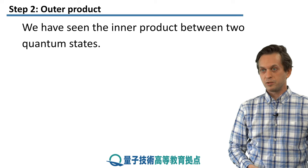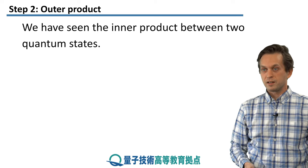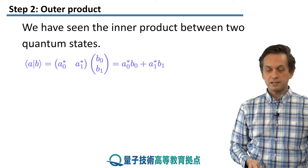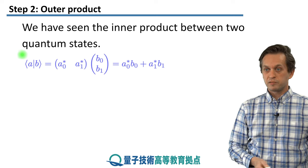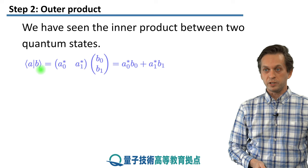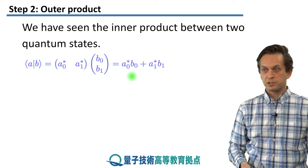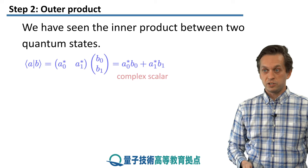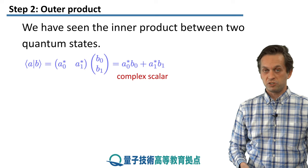We have seen in the previous lesson what an inner product is. If you take two states, A and B, then it's formed by multiplying the bra for A with the ket for B. What you get is this expression right here, which is just a complex scalar, so it's just a number.